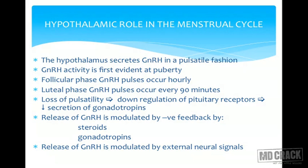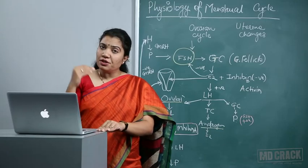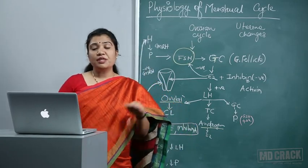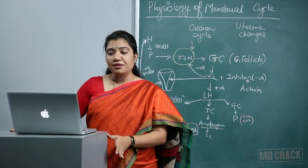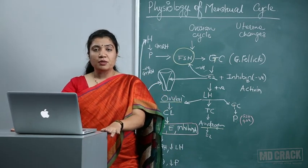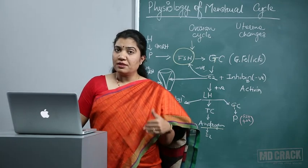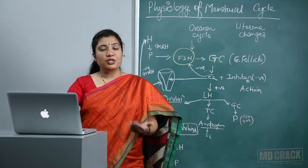Loss of pulsatility: if GnRH is given continuously, there would be down-regulation of pituitary receptors — they will not be responsive and secretion of gonadotrophins will decrease. The pulsatile nature means the hormone is alternately present and at very low concentration in the blood. If there is continuous presence of GnRH, there is naturally down-regulation of the pituitary and gonadotrophins — FSH and LH — will not be secreted. Release of GnRH is modulated by negative feedback from steroids: estrogen, progesterone, and LH and FSH levels.